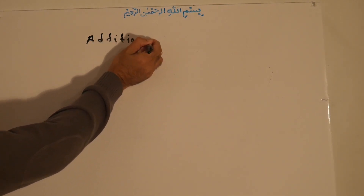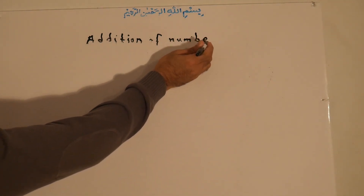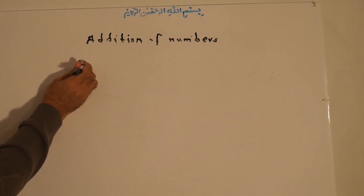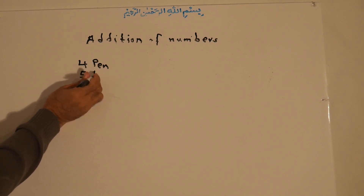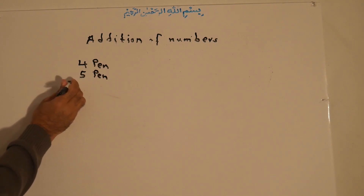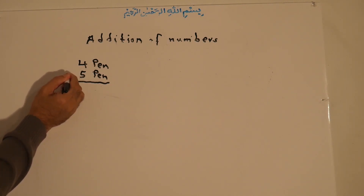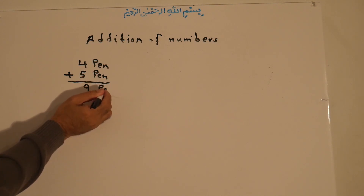What is the meaning of addition? For example, if you have four pens and you buy another five pens, or someone gifts them to you — what is the total number of pens? If you count by fingers, one, two, three, four, five, it takes a lot of time. The method of combining these two numbers together is addition. Addition means four plus five is nine. Four pens plus five pens is equal to nine pens.